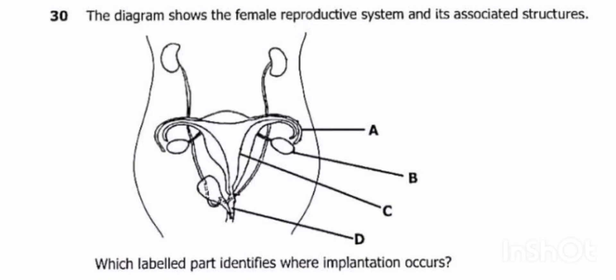Let's look at question number 30. The question says the diagram shows the female reproductive system and its associated structures. Which labeled part identifies where implantation occurs?